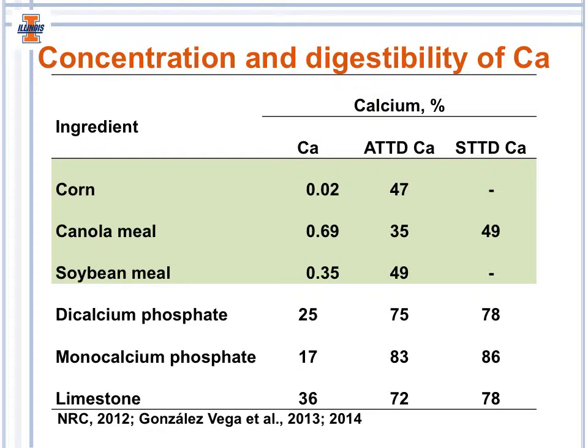In the bottom half of the table, in white, we have the inorganic supplements. The calcium concentration in dicalcium phosphate, monocalcium phosphate, and limestone is much higher, between 17% and 36%. The digestibility of calcium is also much higher in these ingredients: between 72% and 83% on apparent digestibility, and 78% to 86% for standardized total tract digestibility of calcium.